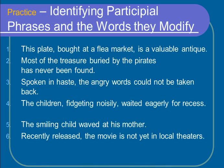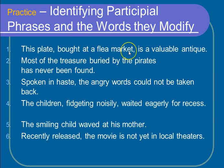Let's look at some more examples. Number one: 'This plate bought at a flea market is a valuable antique.' First, find the participle — bought. Now, ask the question: which plate is a valuable antique? The one that was bought at a flea market. See how that phrase answers the whole question? That's one way to find the participial phrase. The other is to remember to stop at the comma.